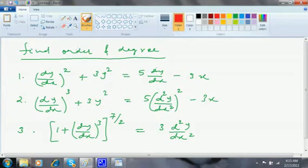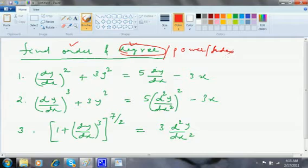Then the question comes: Find the order and degree. What is degree? Degree is power or index. For example, when I write x³, I mean index of x is 3, or power of x is 3, or degree of x is 3.